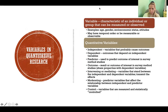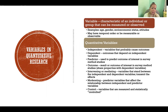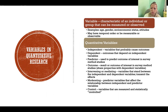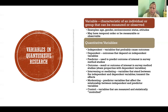A variable is a characteristic of an individual or group that can be measured or observed. Many things can be variables — it depends on what you are studying and who you're studying. Demographic factors are variables, such as age, gender, and socioeconomic status. Other variables could be attitudes, health outcomes, or all sorts of different things.